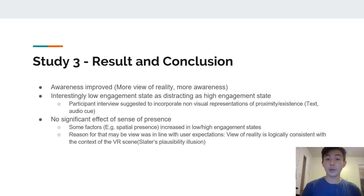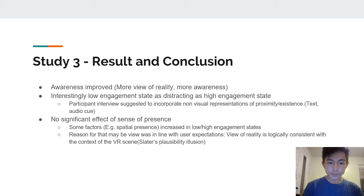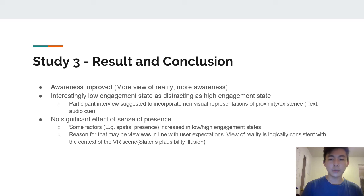The conclusion was that with more view of reality, awareness improved. However, it was interesting that the low engagement state was as distracting as the high engagement state — quite opposite to what the authors hypothesized. Participants suggested incorporating a non-visual representation of people, like text or audio cues, but that might give away the sense of proximity. There was no significant effect on sense of presence, which can be explained by Slater's plausibility illusion — since people were expected to be in the Tuscany Villa, the appearance of ghost-like or opaque figures aligned with the VR environment, so the sense of presence remained.